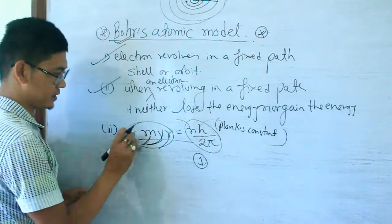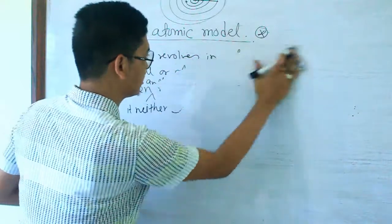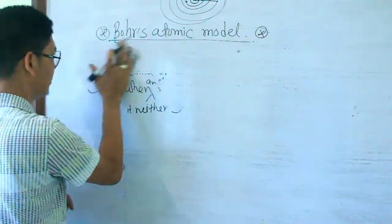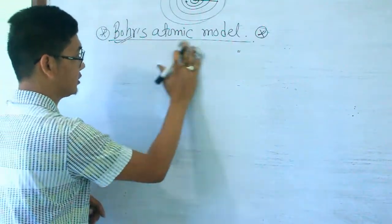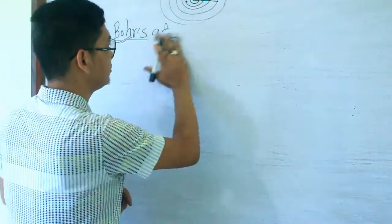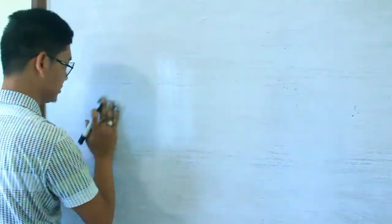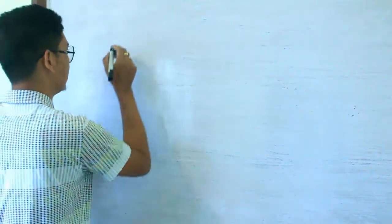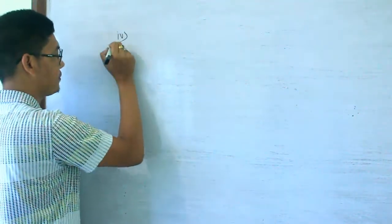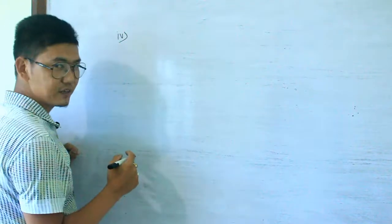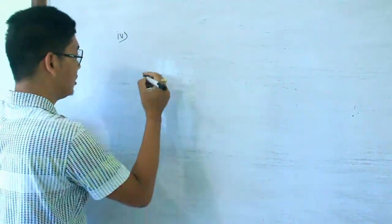The fourth point is about the atomic spectrum. How do you find the atomic spectrum? That's an explanation of what the atomic spectrum is and the most important way to find it.